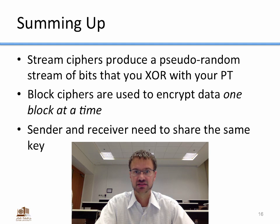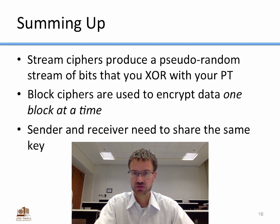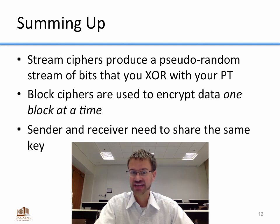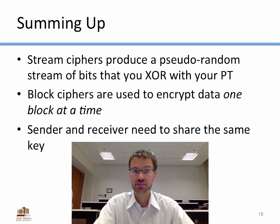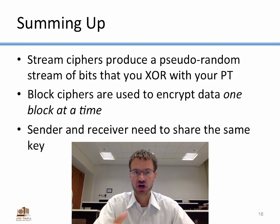To summarize: stream ciphers produce a pseudo-random stream of bits — the key stream — which you exclusive OR with your plain text to encrypt, or with your cipher text to decrypt. Block ciphers encrypt data one block at a time: one block of plain text in, one block of cipher text out. In all symmetric key ciphers discussed today, the sender and receiver need to share the same key.